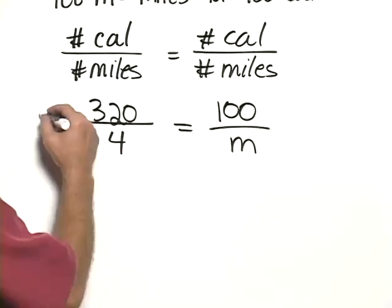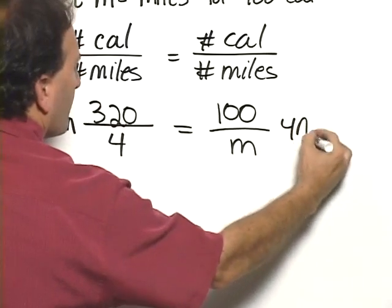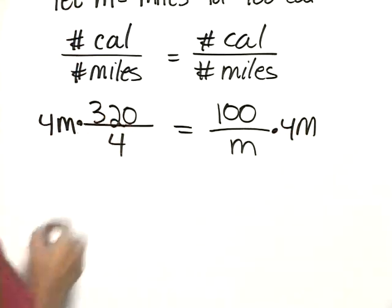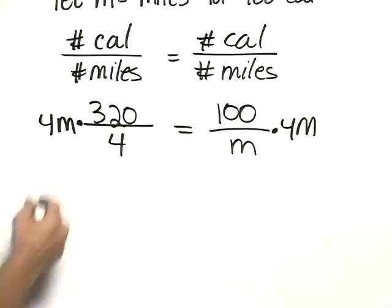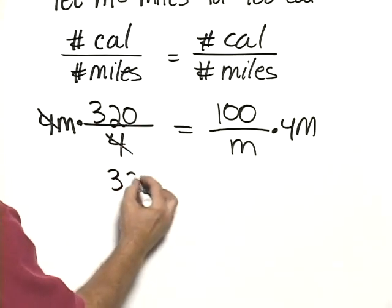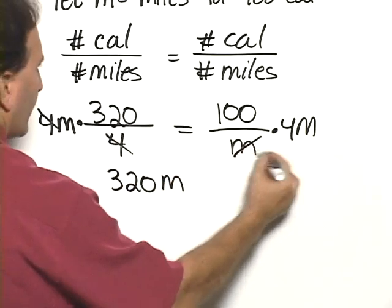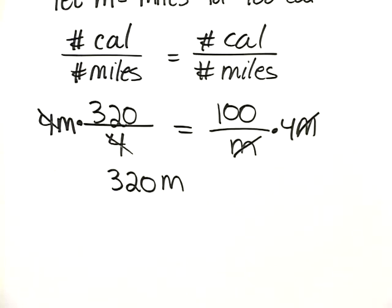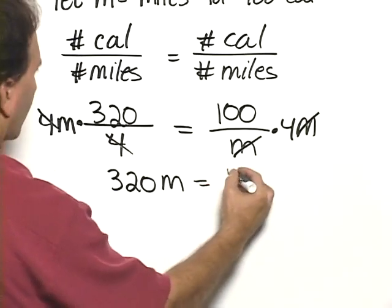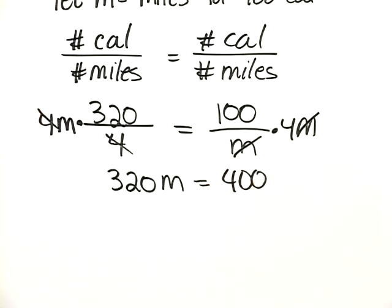We now multiply both sides by 4m, because that's the common denominator. We'll see that we can remove a factor of 1, the 4 over 4, multiplying leaves us the result 320m. On the right-hand side, we remove a factor of 1, the m over m, multiplying 100 times 4 gives us 400.